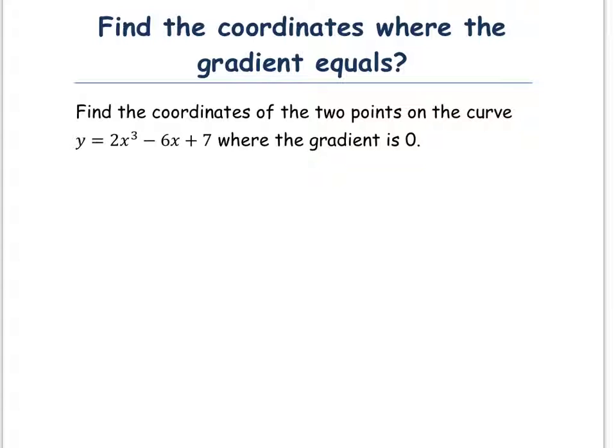So, when we look at this example, it says find the coordinates of the two points on the curve y equals 2x cubed minus 6x plus 7, where the gradient is equal to 0.